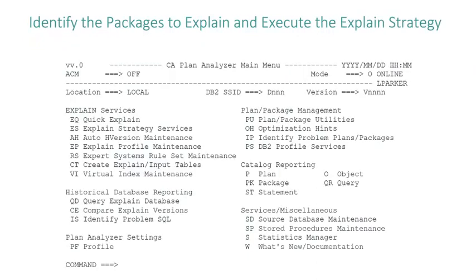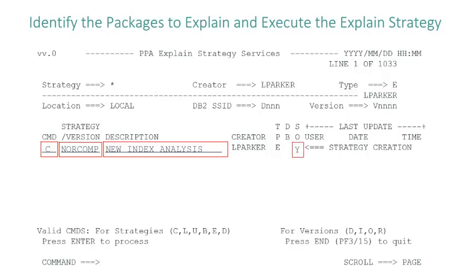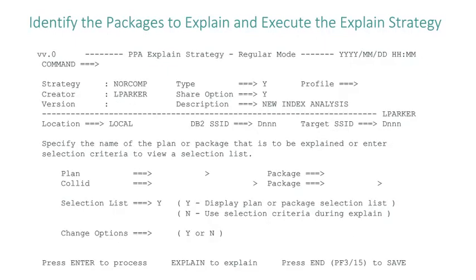Lynn begins at the CA Plan Analyzer main menu. She types ES in the command line to select the explain strategy services option and presses enter. The explain strategy services panel displays. Lynn creates a strategy by typing the letter C in the command line and naming her strategy NORCOMP. For the description, she types 'new index analysis'. In the share option field, she types a value of Y, which allows other users to explain or browse her strategy. Lynn presses enter and the explain strategy regular mode panel displays.